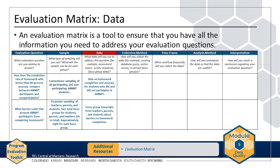Next, write in the data you will need to address each question. You may find that you need two or more data sources if you are addressing a question with both quantitative and qualitative elements. In the AMP example, the evaluation team has added a single data source for each of the evaluation questions. Homework accuracy and completion data are quantitative, and focus group transcripts are qualitative.